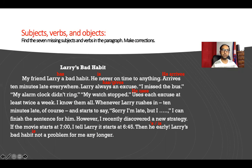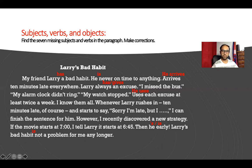The next question was: find the seven missing subjects and verbs in this paragraph and make corrections. For example, 'My friend Larry a bad habit' — no verb, so it should be 'My friend Larry has a bad habit.' 'He is never on time to anything' — 'arrives' needs a subject, so it should be 'He arrives.' 'Larry always an excuse' — should be 'Larry always has an excuse' or 'gives an excuse.' Then 'uses' — it should be 'he uses.' Then 'he's early.' The last correction: 'bad habit is not a problem for me any longer' — 'it's' is missing, so 'it's not a problem for me any longer.'